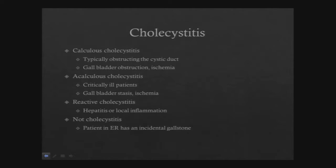Calculous cholecystitis is the most commonly seen. It is typically a stone obstructing the cystic duct, but unlike symptomatic cholelithiasis, this usually persists, leading to obstruction, distention, and ischemia of the gallbladder. Acalculous cholecystitis — no stones in the gallbladder — is typically seen in critically ill patients with gallbladder stasis and ischemia. There's also reactive cholecystitis, seen in patients with hepatitis where local inflammation causes the gallbladder to have reactive inflammation. Notably, we also commonly get consulted for patients who simply happen to have a gallstone incidentally.